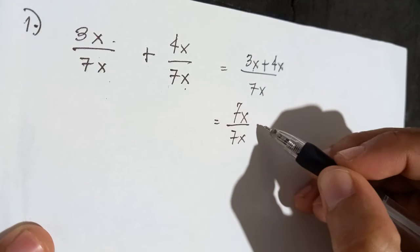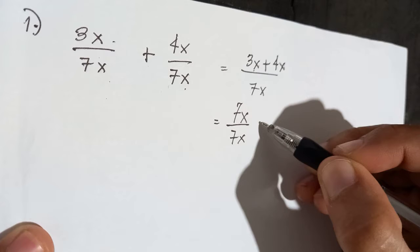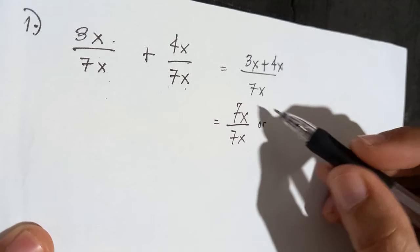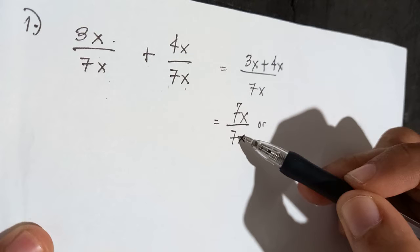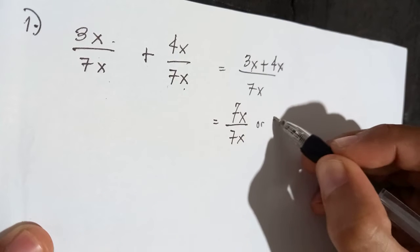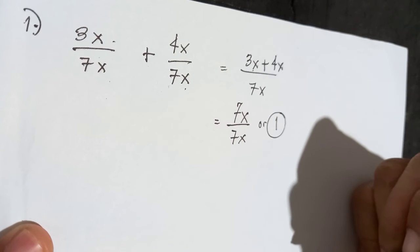And we can simplify this. 7x all over 7x. It's very obvious that the numerator and the denominator are just the same. So therefore, the final answer is 1.